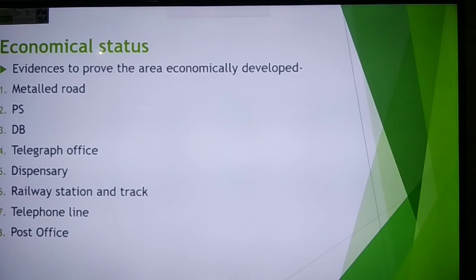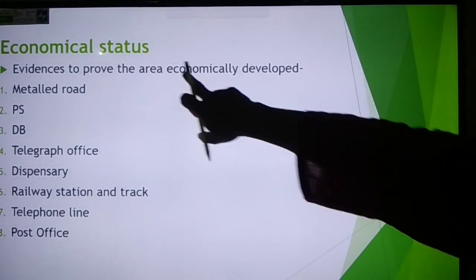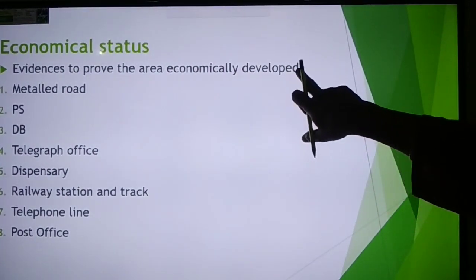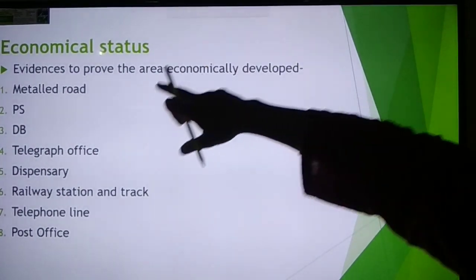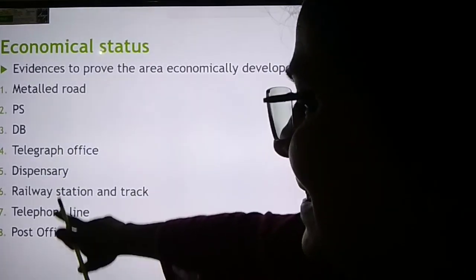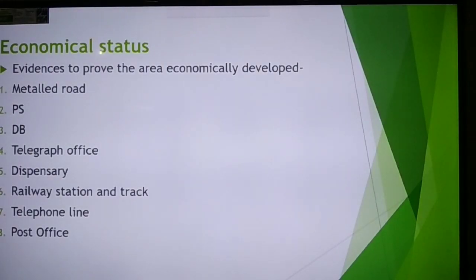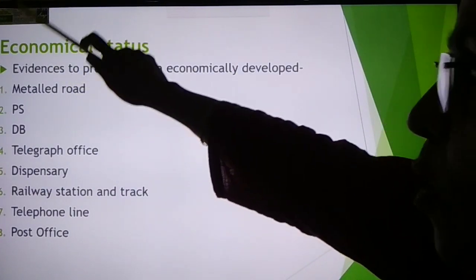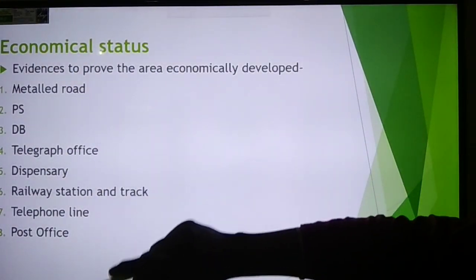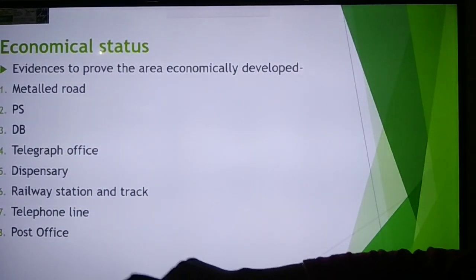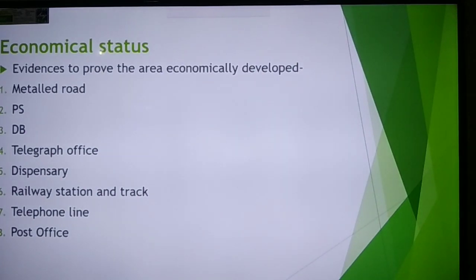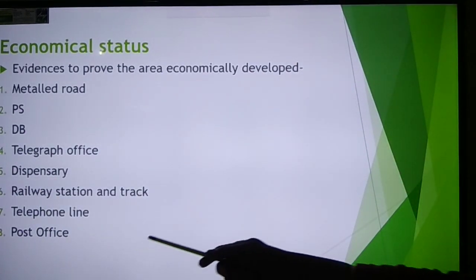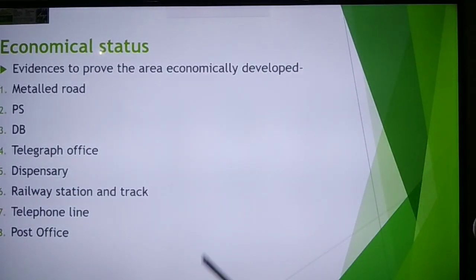The next common question is: give evidence to prove the area is economically developed or backward. To prove the area is economically developed, we have to check if these things are on the topo sheet: metal road, police station, dak bungalow, telegraph office, dispensary, railway station, telephone line, or post office. If these amenities are available in the given area, then we can say this area is economically developed.